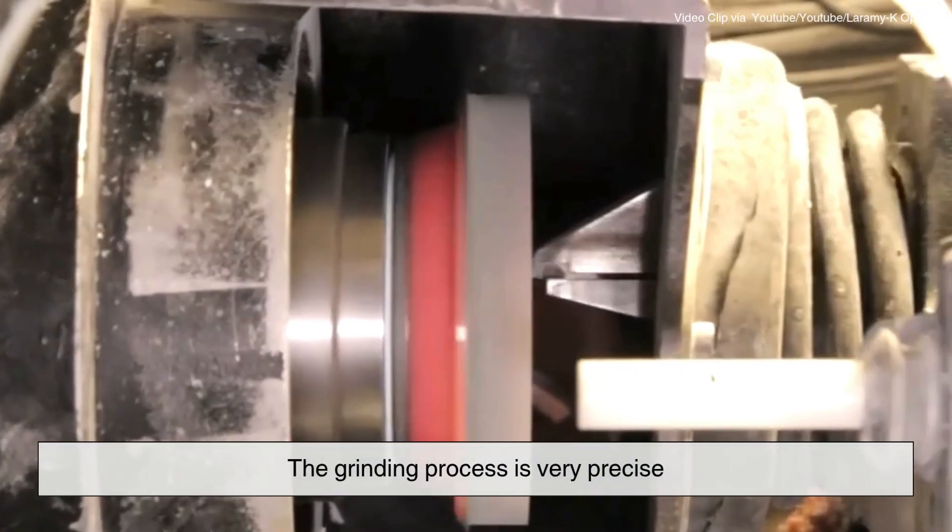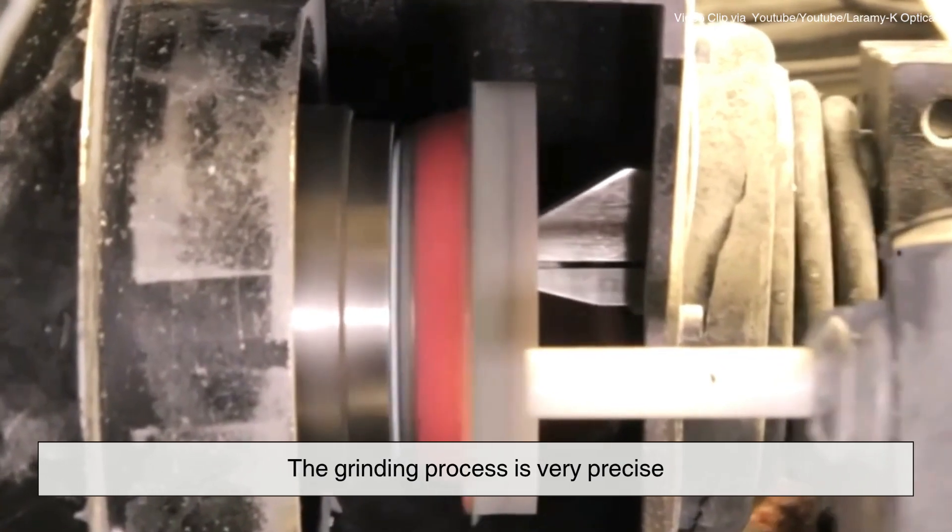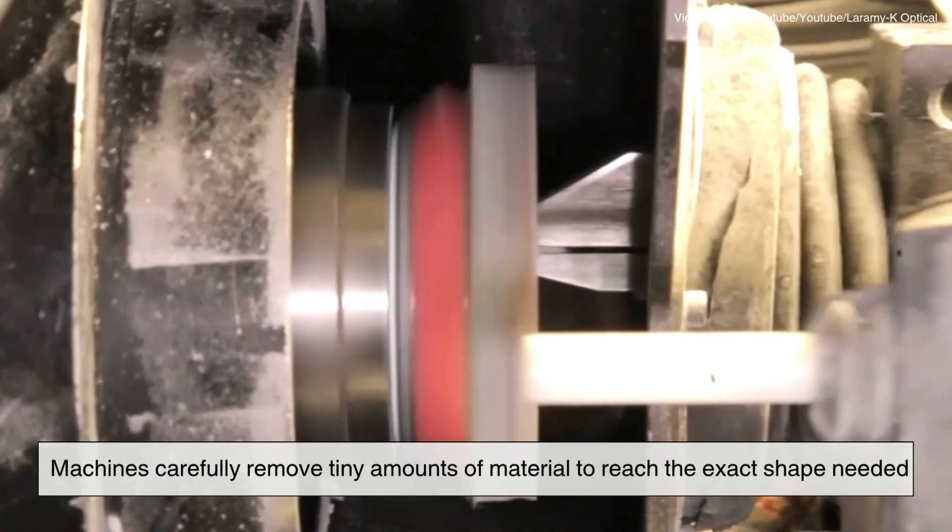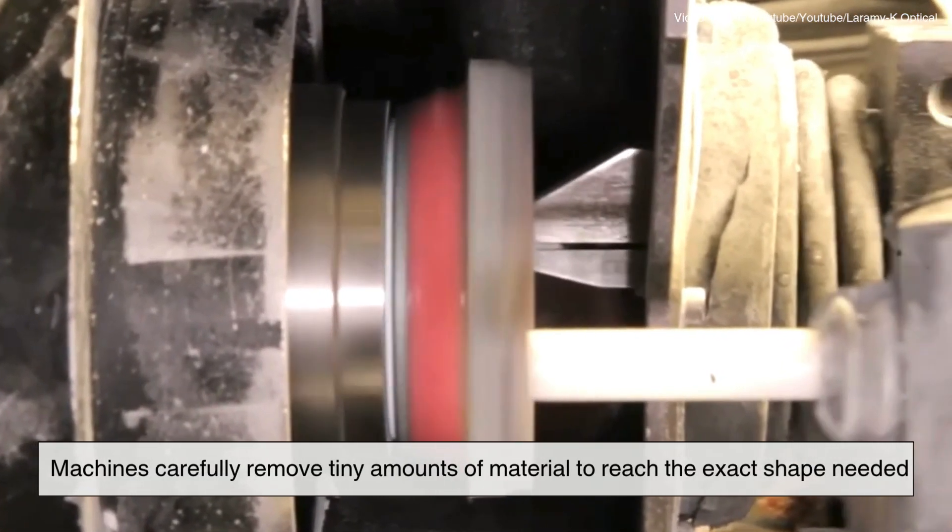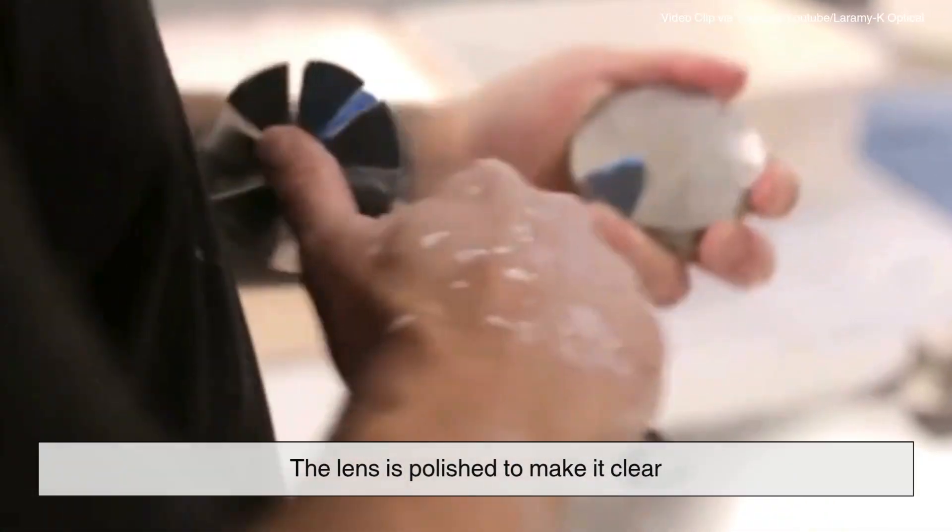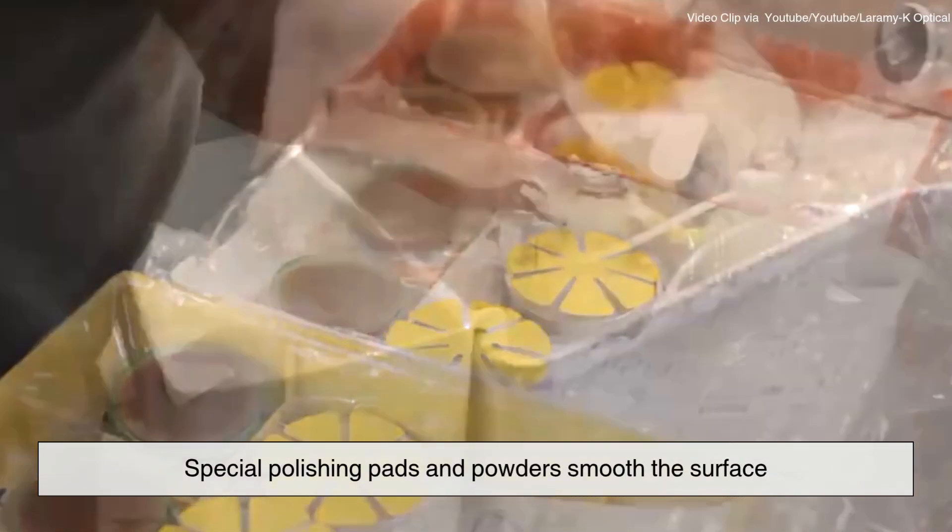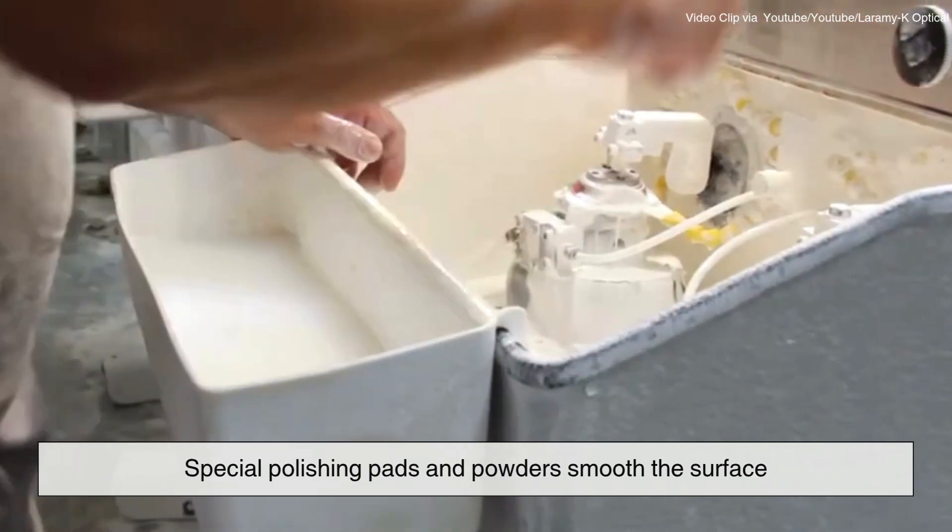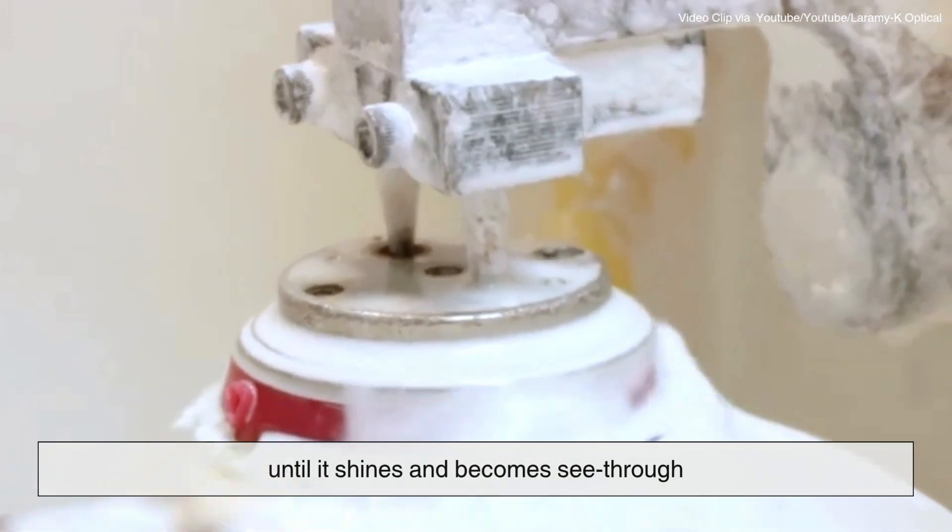The grinding process is very precise. Machines carefully remove tiny amounts of material to reach the exact shape needed. Once that's done, the lens is polished to make it clear. Special polishing pads and powders smooth the surface until it shines and becomes see-through.